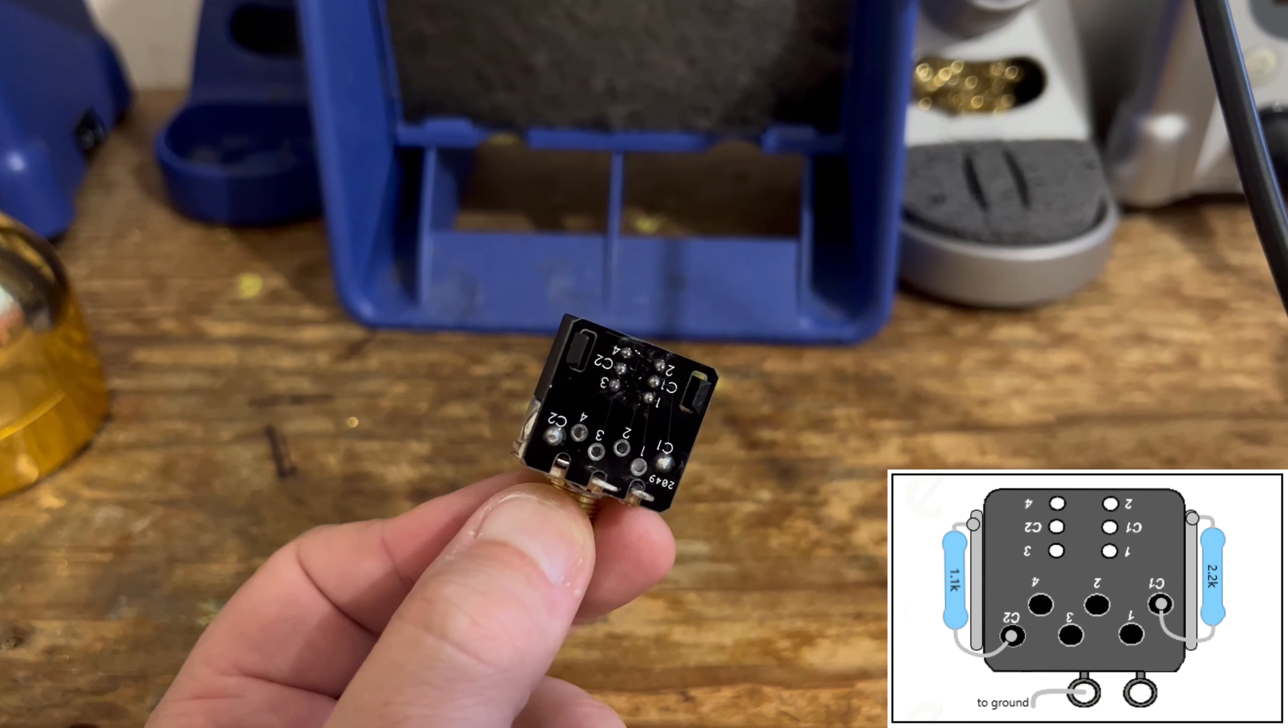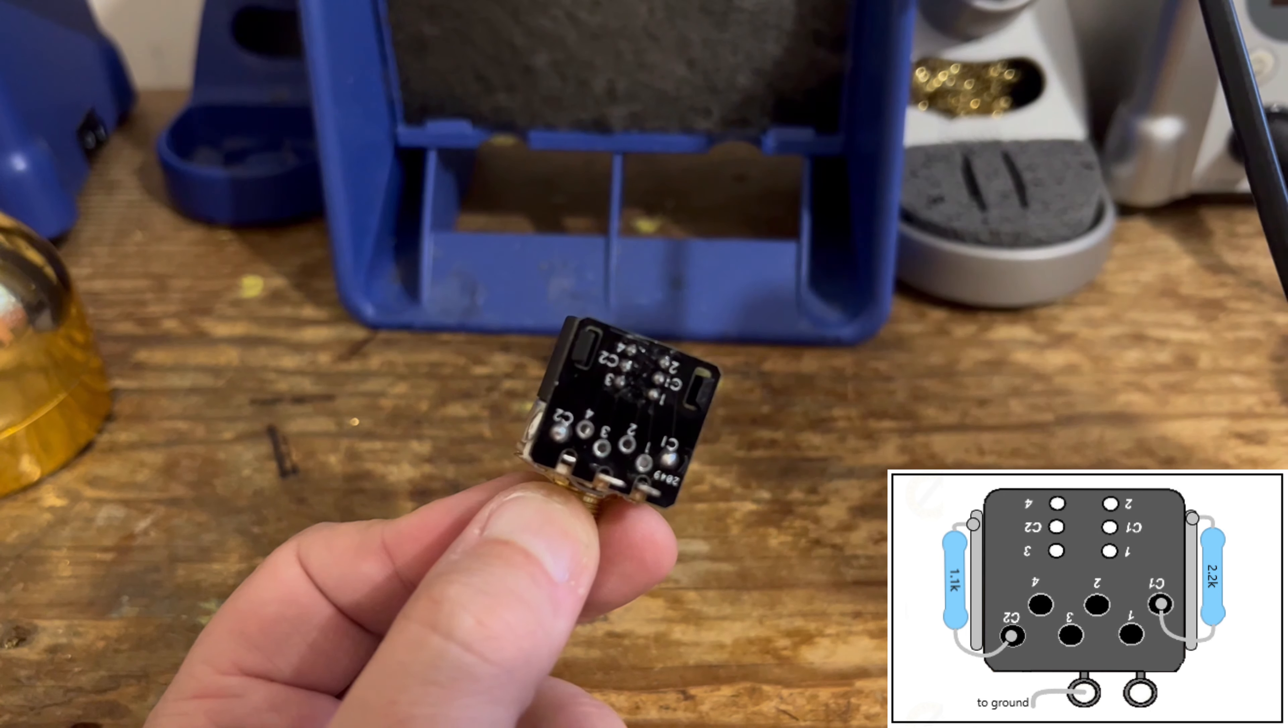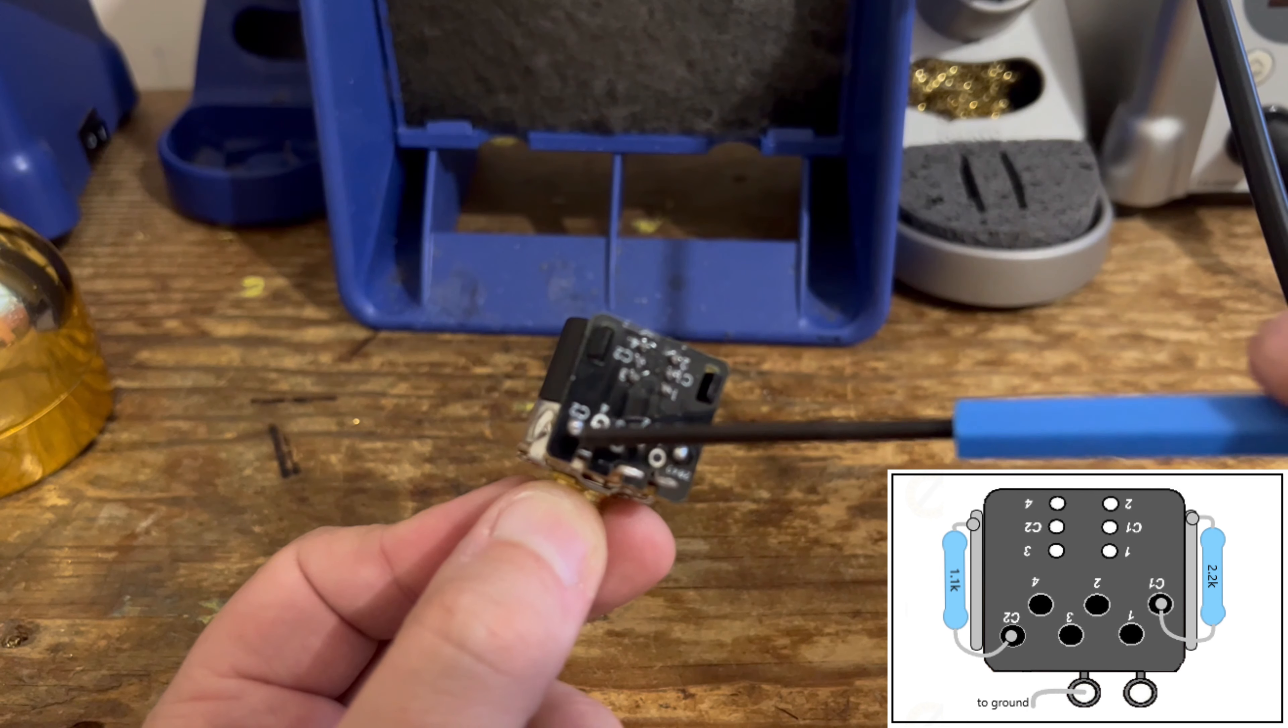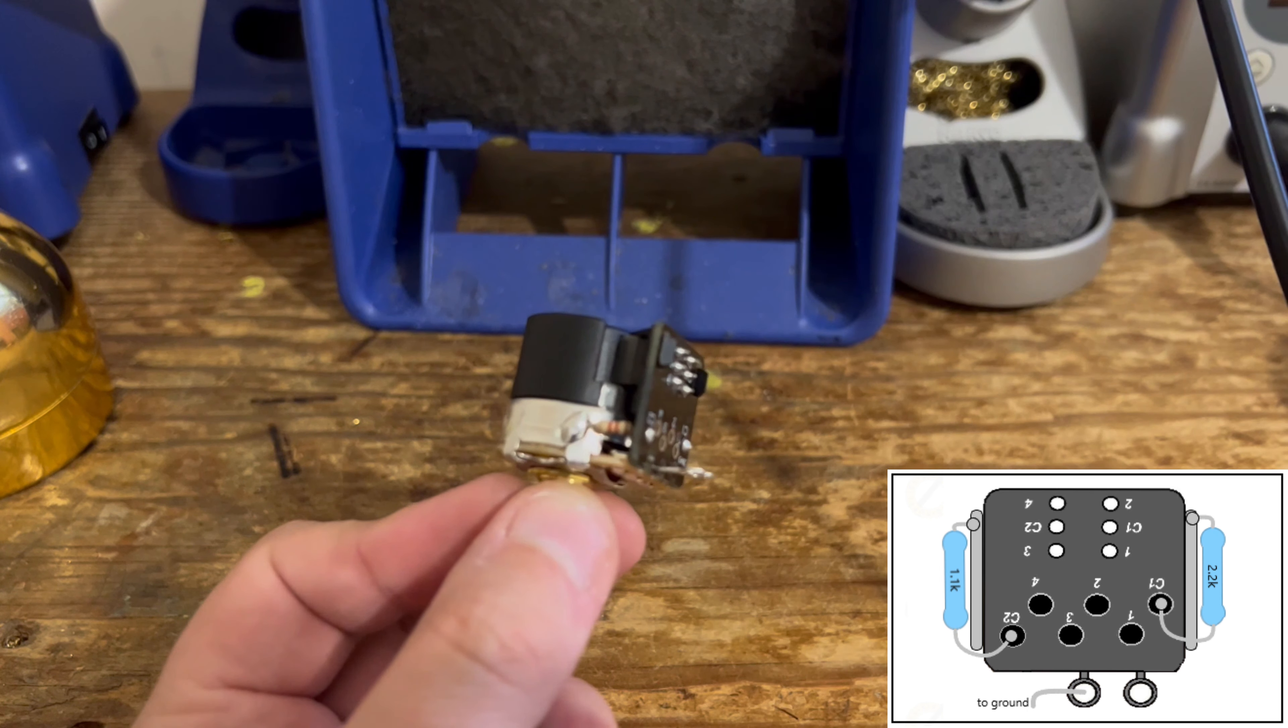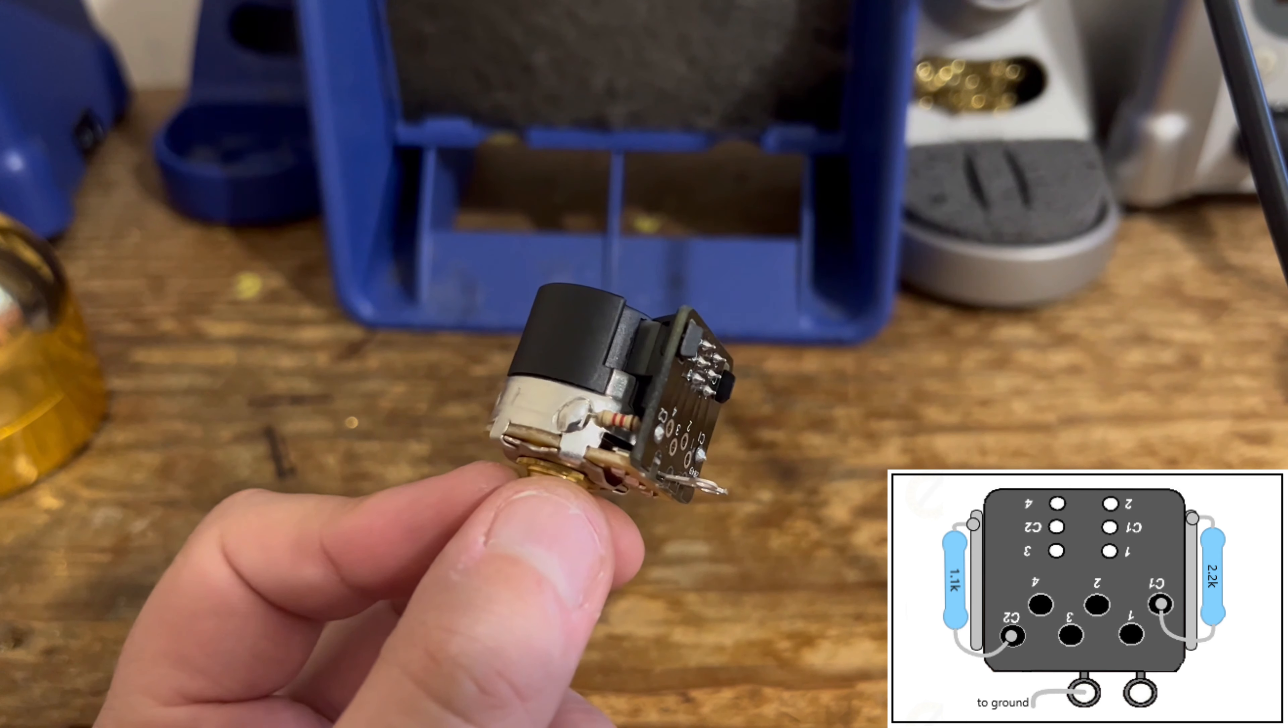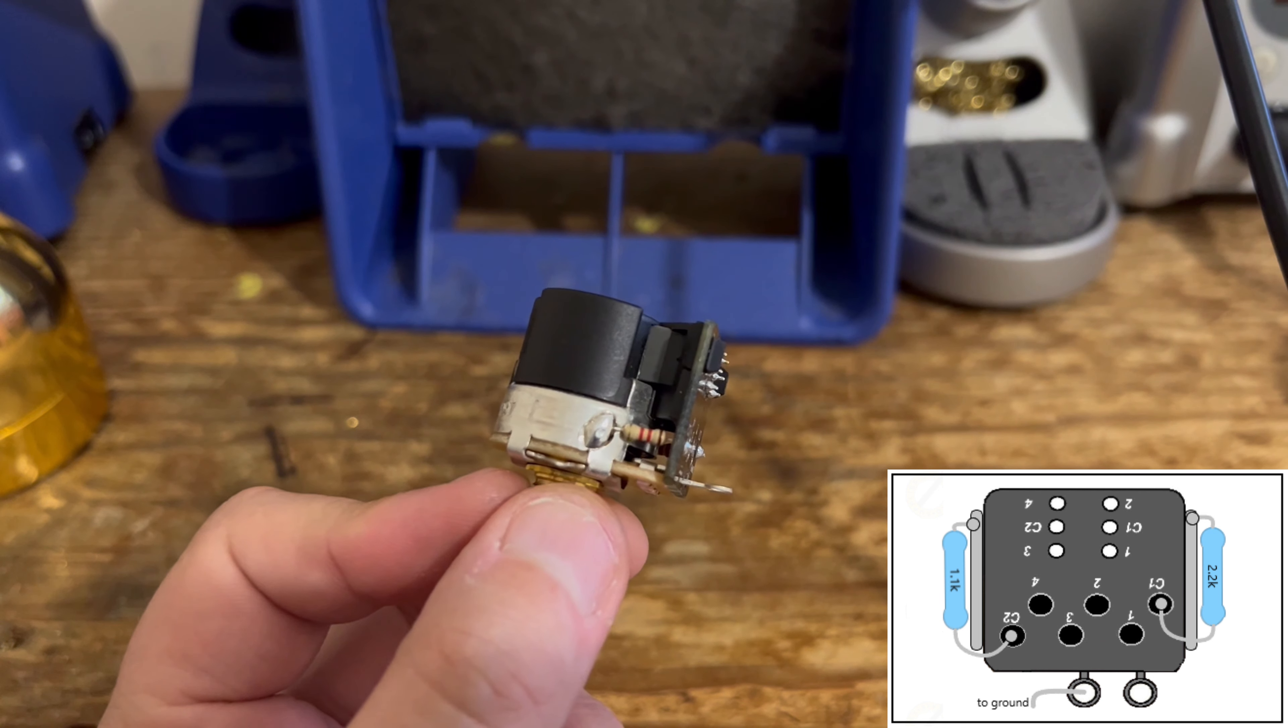So on one side for the neck pickup, these are CTS push-pull pots, obviously. So hole C2, which is this one in the bottom left-hand corner. We've got a 1.1K resistor, so one end of it has gone into the hole there, and the other end has been soldered to ground, which in this case is the side of the pot casing.